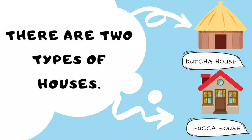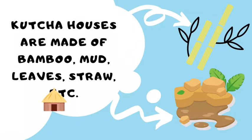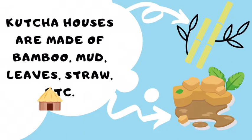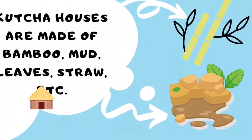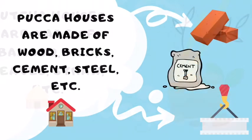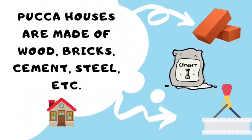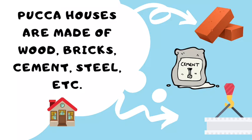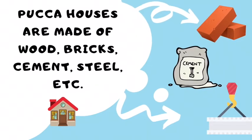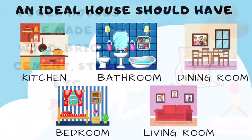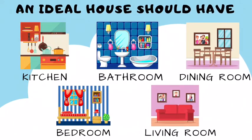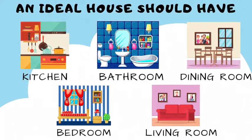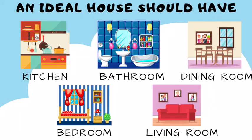Kacha house and Paka house. Kacha houses are made of bamboo, mud, leaves, straw, etc. Paka houses are made of wood, bricks, cement, steel, etc. An ideal house should have a kitchen, a bathroom or toilet, a dining room, a bedroom, and a living room.